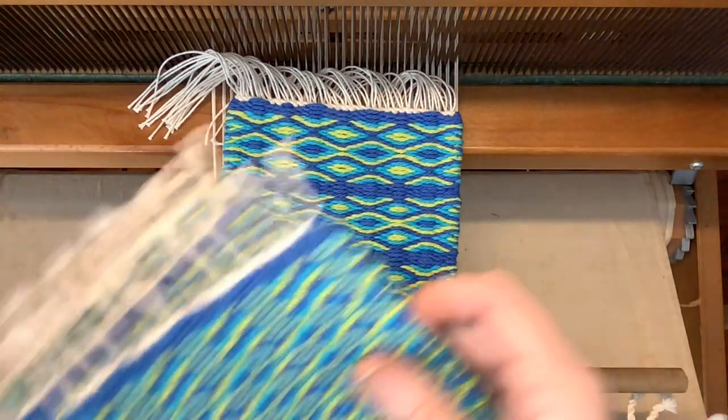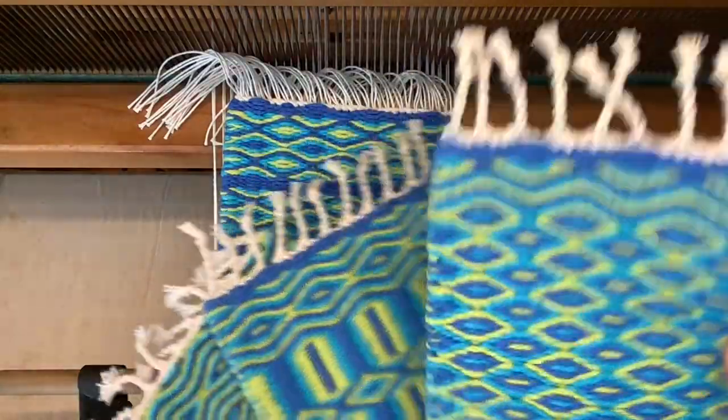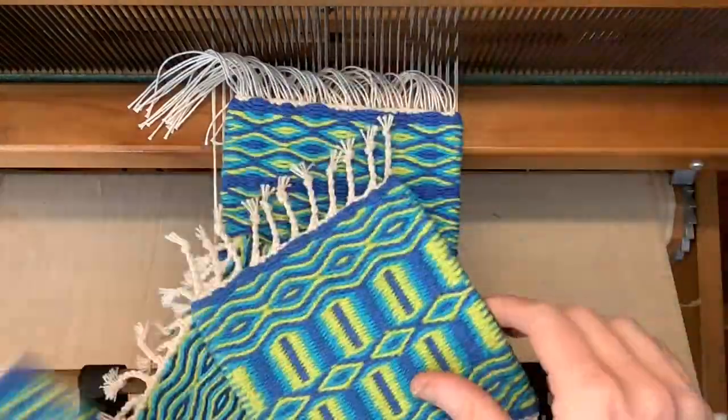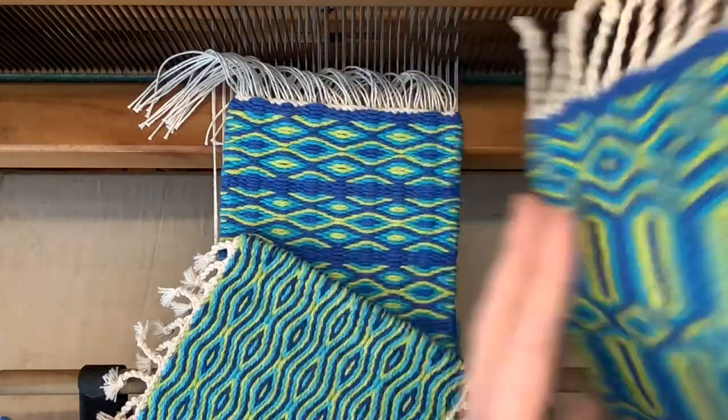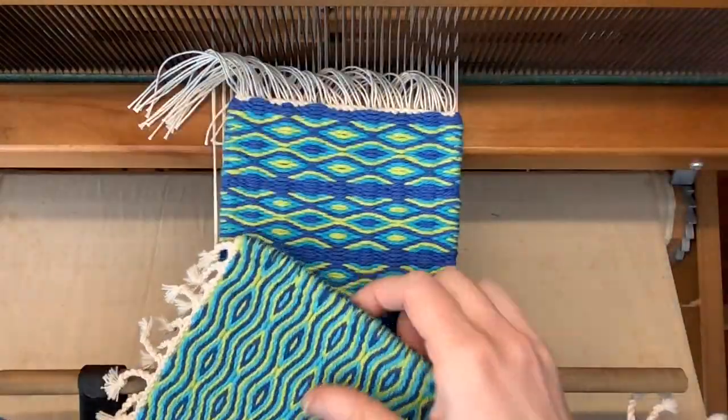Instead of a simple zigzag, we can get a huge variety of diamond patterns like these by periodically reversing the direction of treadling from 1-2-3-4 to 4-3-2-1 and back again.